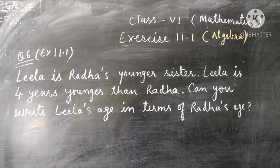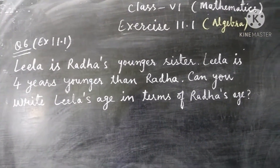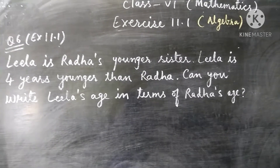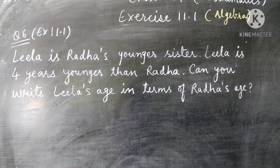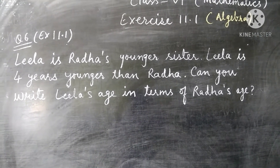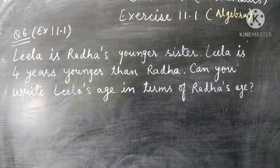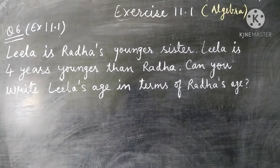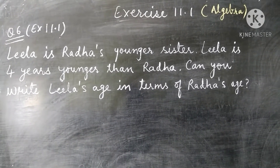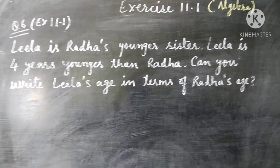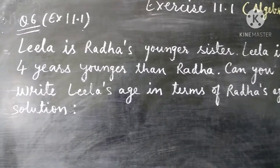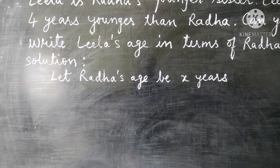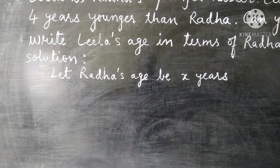Question number 6, Exercise 11.1. The question is: Leela is Radha's younger sister. Leela is 4 years younger than Radha. Can you write Leela's age in terms of Radha's age? Let's start the solution. Let Radha's age be x years.